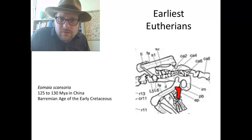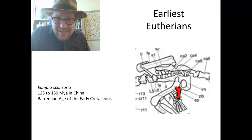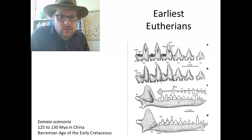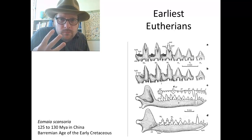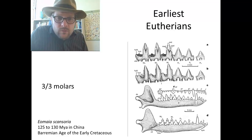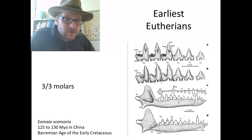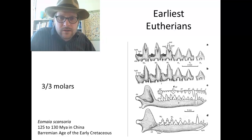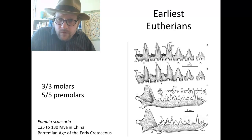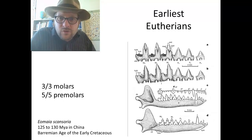So why is Eomaia considered a eutherian and not a metatherian if it has an epipubic bone? It comes down to the dental formula. Marsupials have four molars, but Eomaia has three molars on both the upper and lower parts — more characteristic of placental mammals. Counting the premolars, it has five upper and five lower premolars, one more than expected, so it has an extra tooth that will be lost later.